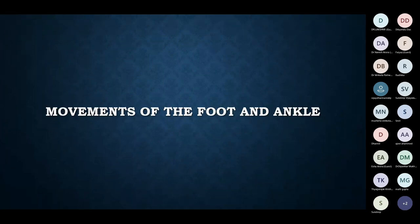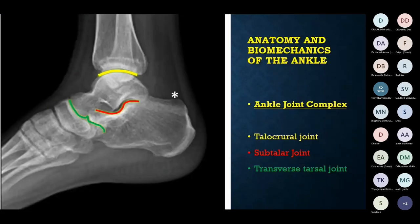The movements of the foot and ankle occur about the ankle joint complex, which is not a single joint but a combination of three joints. The first is the tibiotalar or talocrural joint, marked between the tibia and talus. The second is the subtalar joint, a hinge joint between the talus and calcaneum that acts like a torque converter.